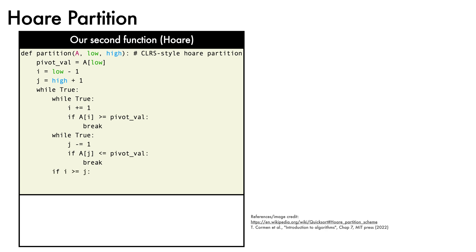If we reach a point when i is greater than or equal to j, we return j as the pivot. Otherwise, we swap ai and aj, and continue our while loop.